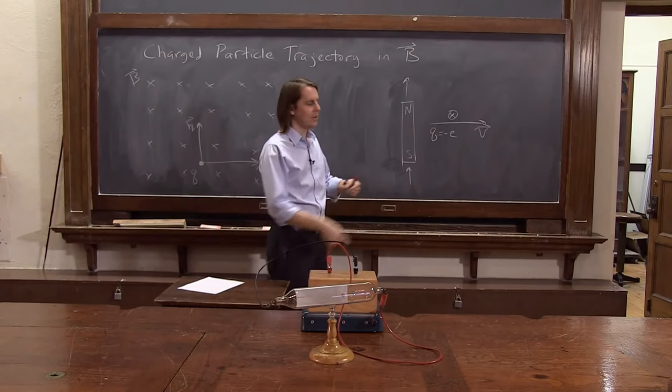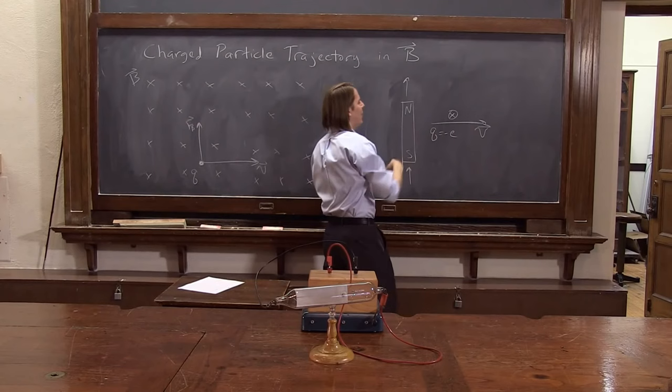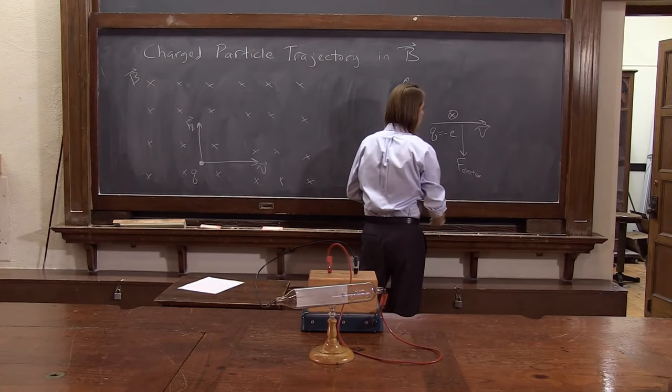So right hand rule says it's up for positive, but the force is down for an electron. So it did deflect the right way. It deflected down.